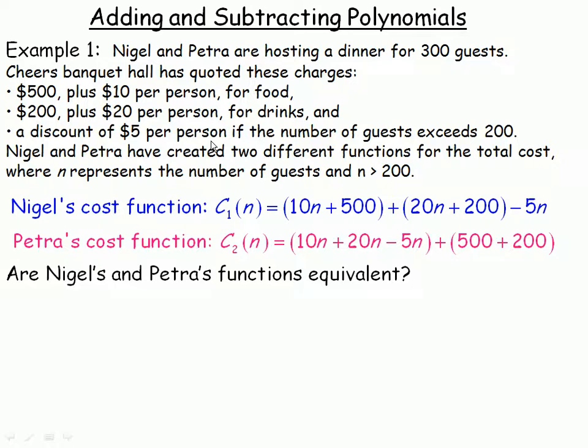Now Nigel and Petra have created two different functions for the total cost. In these formulas, N will represent the number of guests.